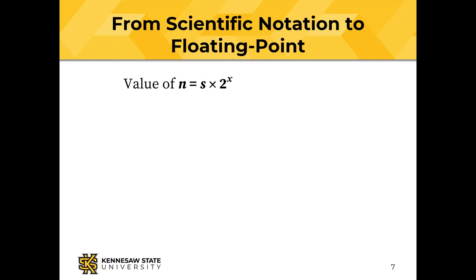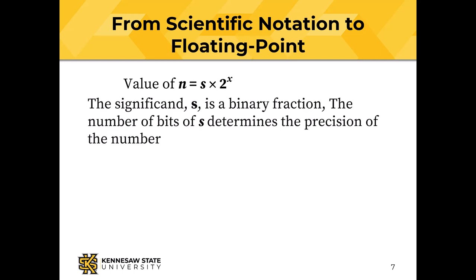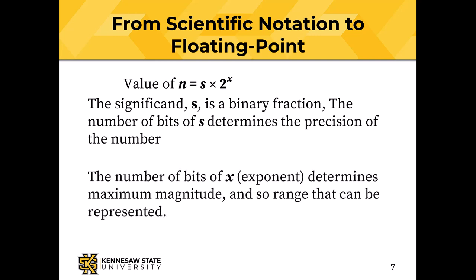We can make the transition from scientific notation to floating point this way. Floating point numbers use the same idea: we separate the precision from the magnitude and use two relatively small numbers in a way that lets us represent very big and very small values. The difference is that the significand s is a binary fraction, and the base — the radix — is 2, so the exponent represents a power of 2. The floating point number n equals the binary fraction significand s times 2 to the power of the exponent. The number of bits in s determines the maximum precision, and the number of bits in x, the exponent, determines the maximum and minimum magnitude and limits the range that can be represented.